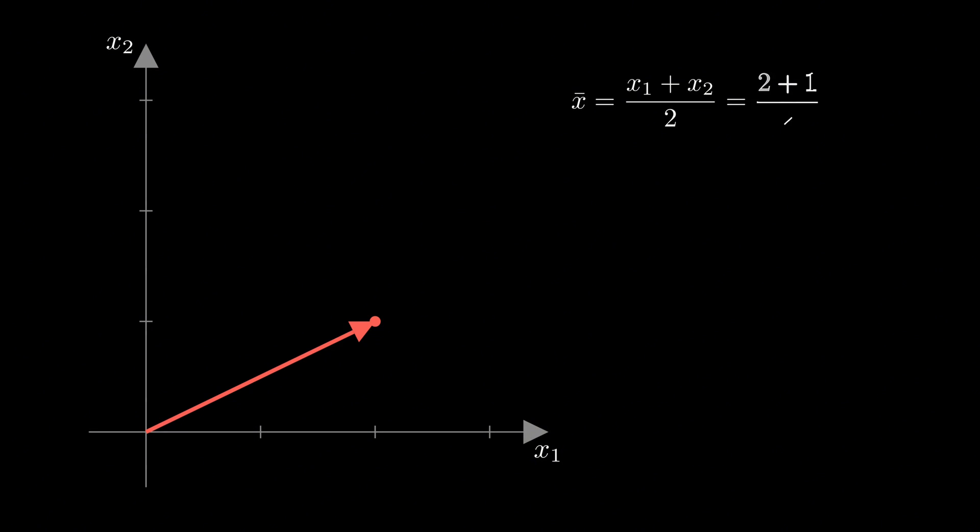First, let's calculate the mean of our two measurements. We have 2 and 1, so the mean is 2 plus 1 divided by 2, which gives us 1.5. Now, here's the key insight. We can always split our data vector into two parts, a mean vector plus a residual vector.